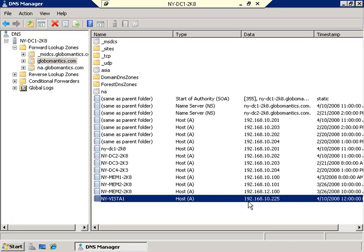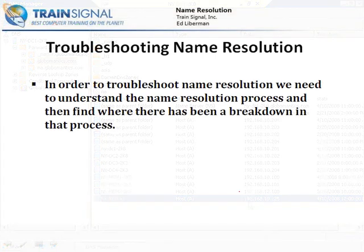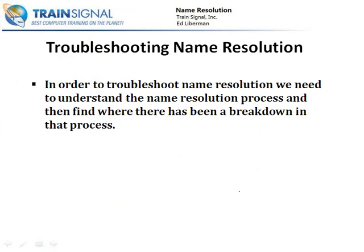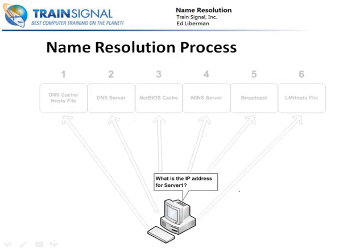Now let's look at how to troubleshoot name resolution. My philosophy is simple: understand the name resolution process and find where there's been a breakdown. This may seem obvious, but I've seen many administrators troubleshoot name resolution the wrong way. Let's look at the six-step process. We have a client looking for the IP address of server1 — if configured to append DNS suffixes and a member of globalmantics.com, it's technically looking for server1.globalmantics.com.